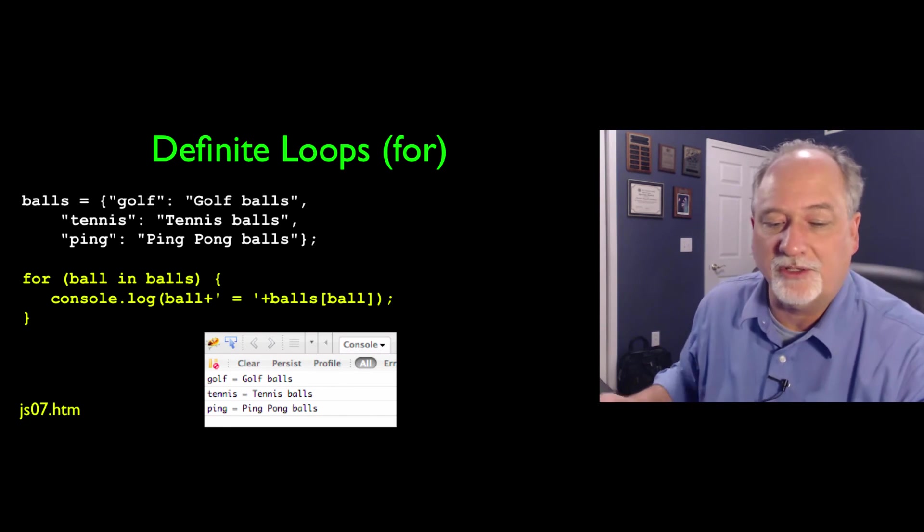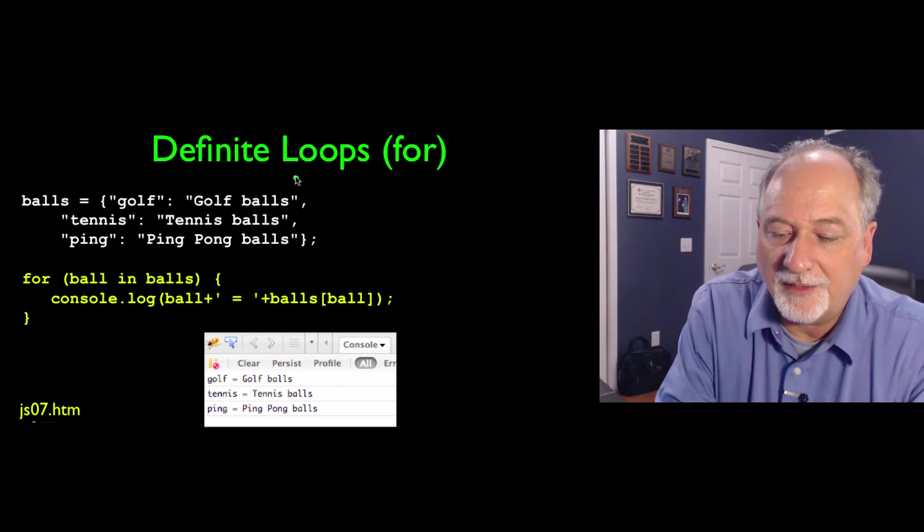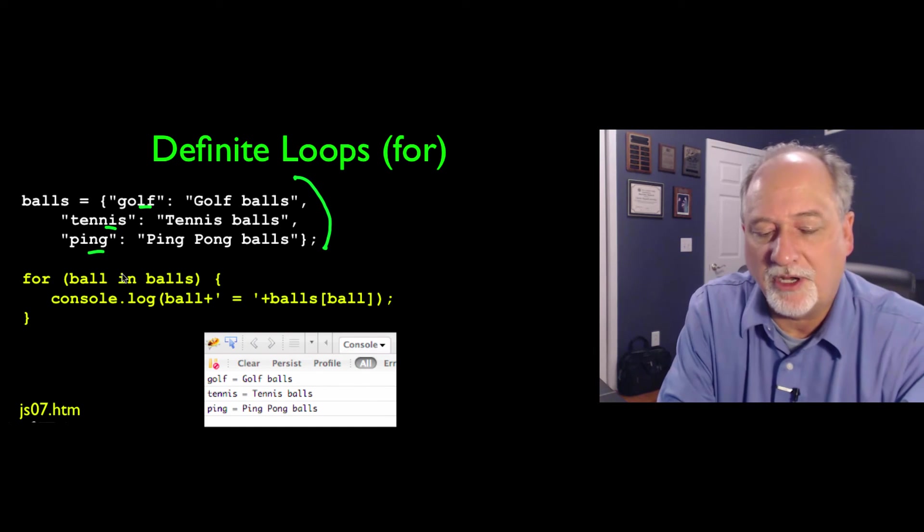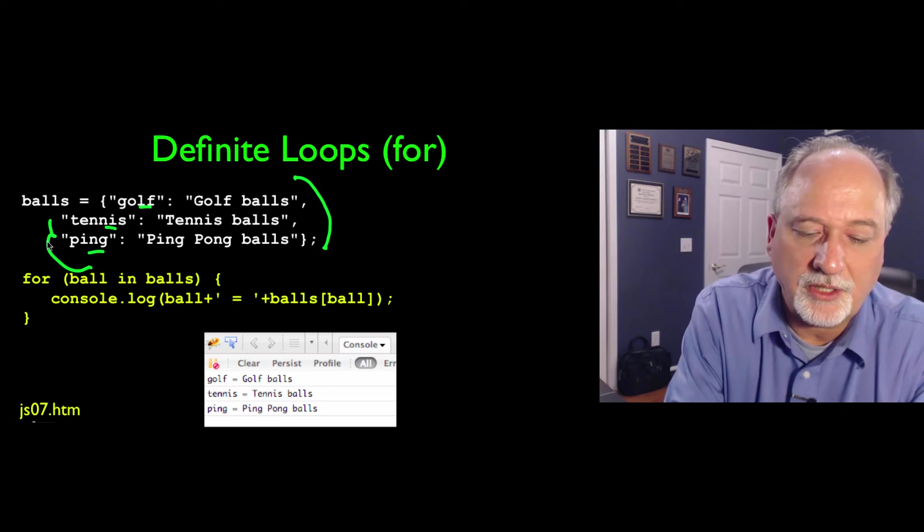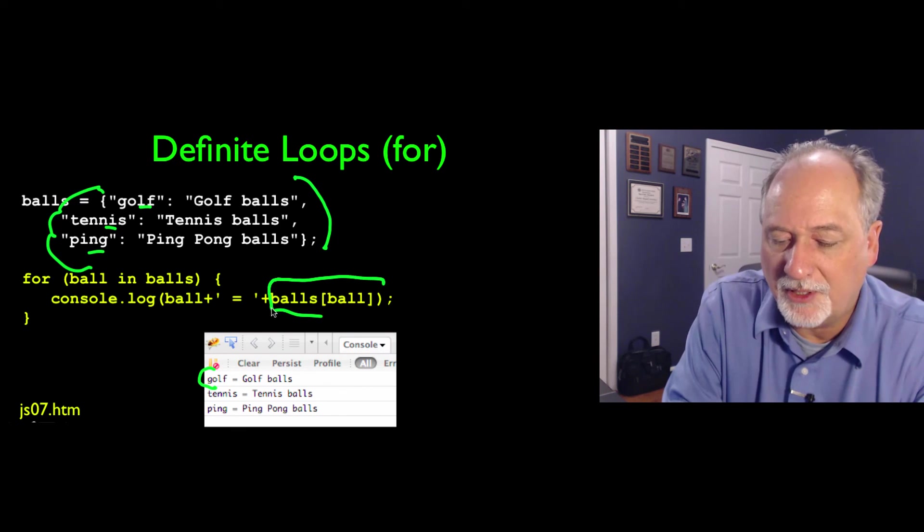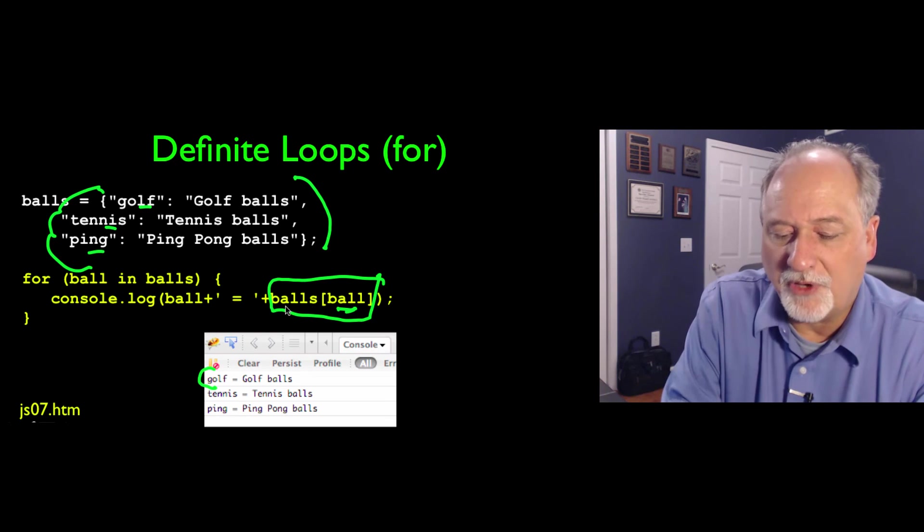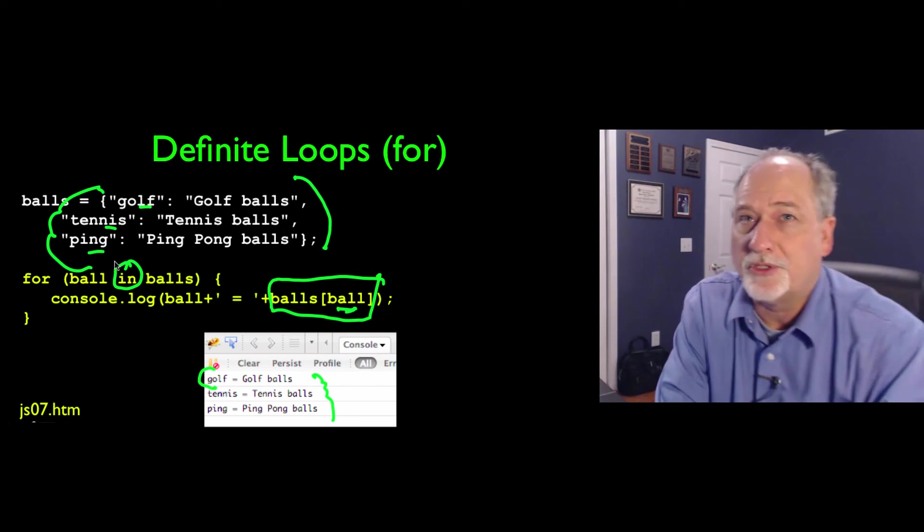So here is the definite loop for, the in. And so if we have a, in this case this is an object with three member variables. For ball and balls that's going to sort of iterate. Ball is now going to iterate through these three things. And if we print out golf which is a string, and then we look up balls sub ball. So that is a string. Balls sub golf. Balls sub tennis. So it prints these guys out. So that's an in. It uses the in keyword similar to Python.